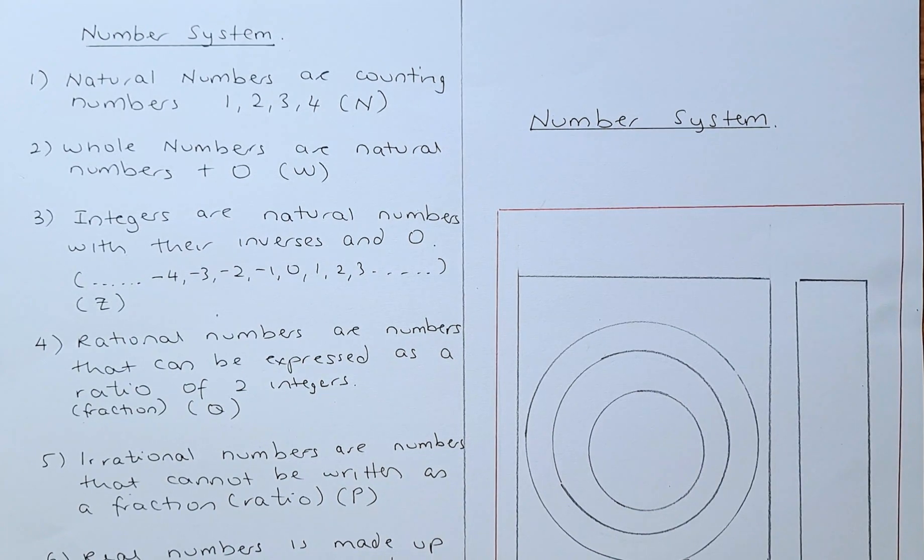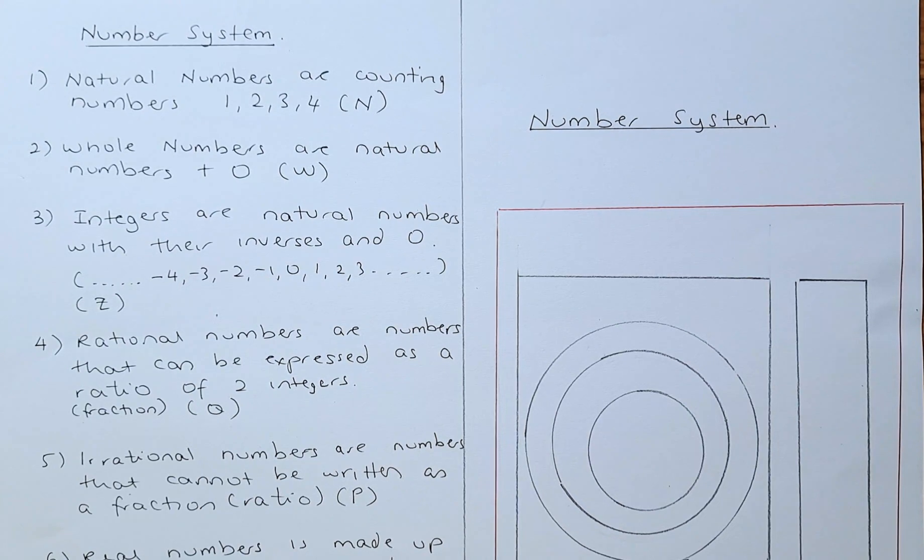They are the natural numbers, whole numbers, integers, rational numbers, irrational numbers, and real numbers. Further in the future you will learn more complicated numbers like binary numbers and complex numbers, which will be covered in later years.